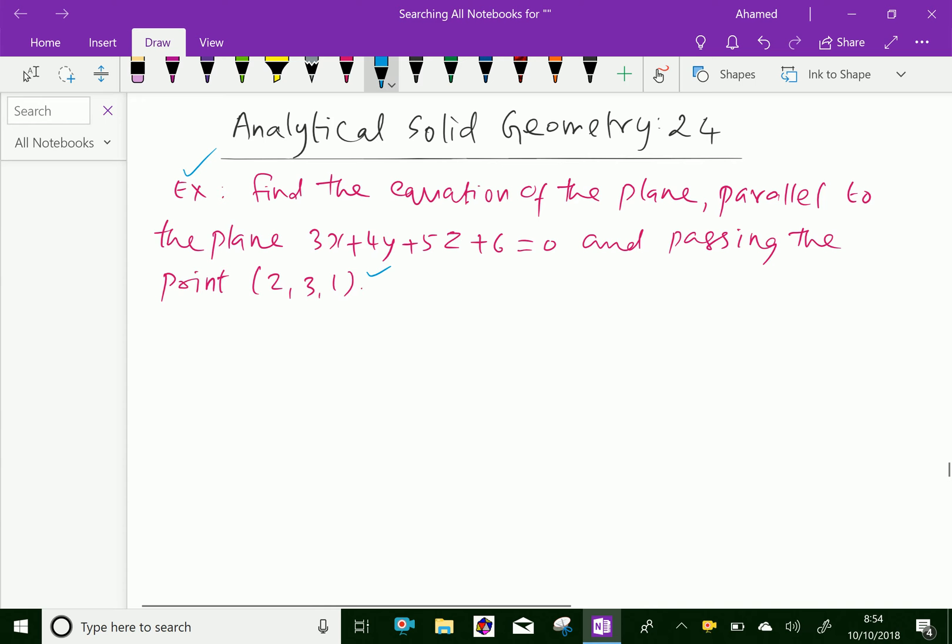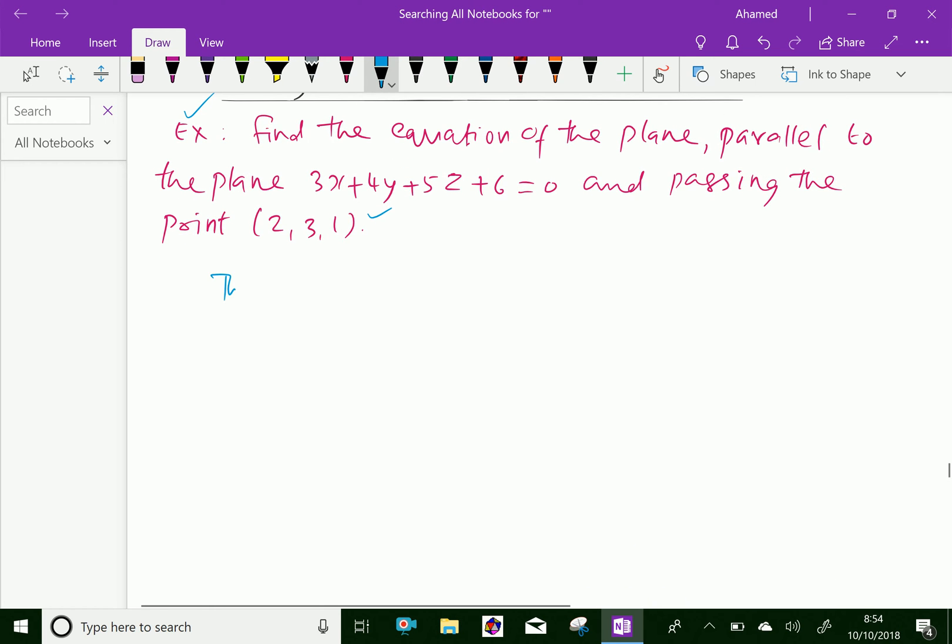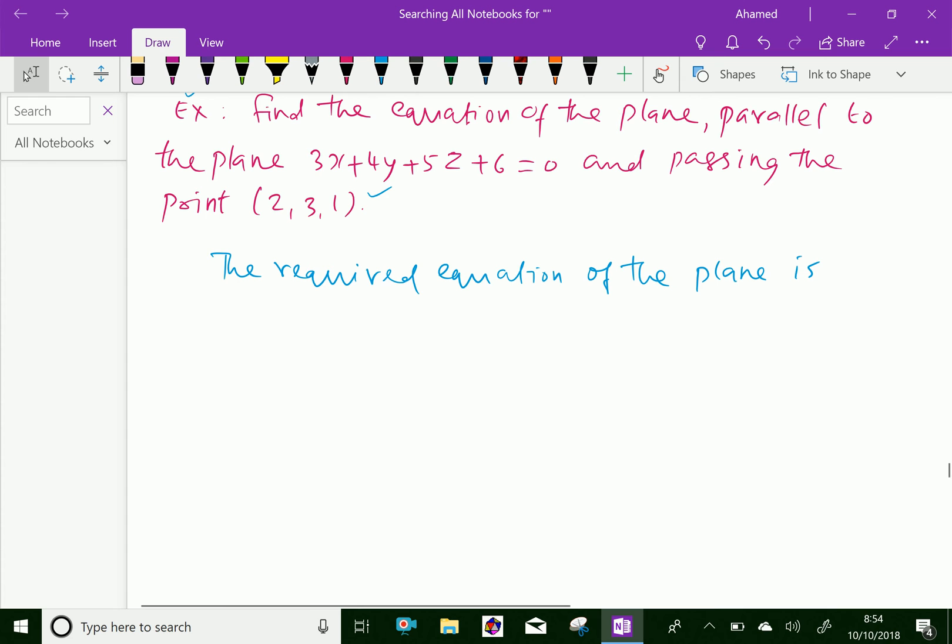And here, the required equation of the plane is parallel to the plane of 3x plus 4y plus 5z plus 6 equals 0. Therefore, only varying the constant, that is 3x plus 4y plus 5z plus k equals 0,